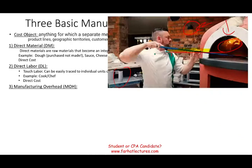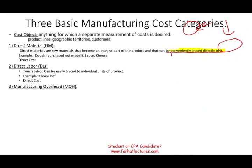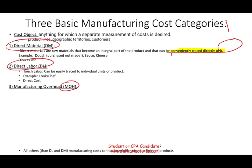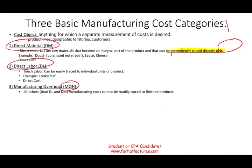We need all sorts of different supplies and so on. So any cost we incur other than direct material and direct labor in our manufacturing facility is called manufacturing overhead cost, abbreviated as MOH. The definition for manufacturing overhead: all costs other than direct material and direct labor in the manufacturing process that cannot be readily and easily traced to the finished product.